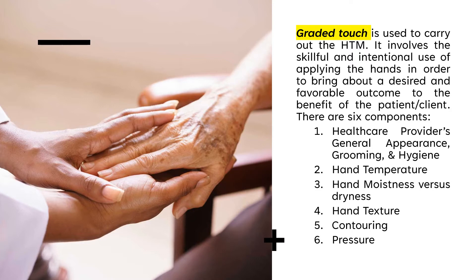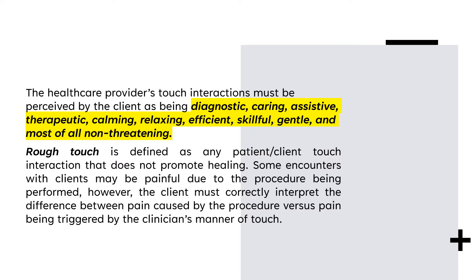We also discussed how graded touch is used to carry out the Healing Touch Model. It involves the skillful and intentional use of applying the hands in order to bring about a desired and favorable outcome for the client. There are six components of graded touch: the healthcare provider's general appearance, grooming, and hygiene; hand temperature; hand moistness versus dryness; hand texture; contouring; and pressure. The healthcare provider's touch interactions must be perceived by the client as being diagnostic, caring, assistive, therapeutic, calming, relaxing, efficient, skillful, gentle, and most of all non-threatening.